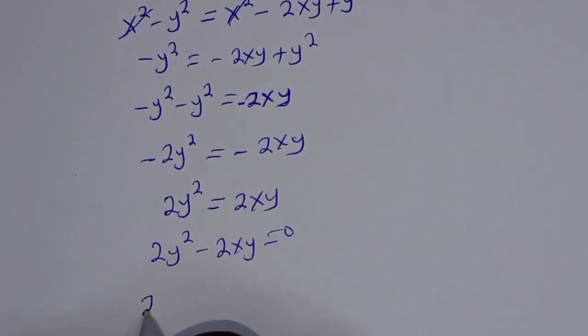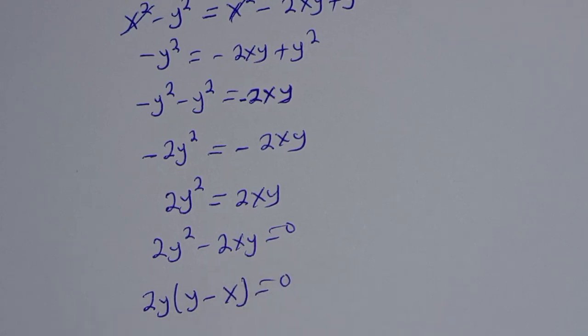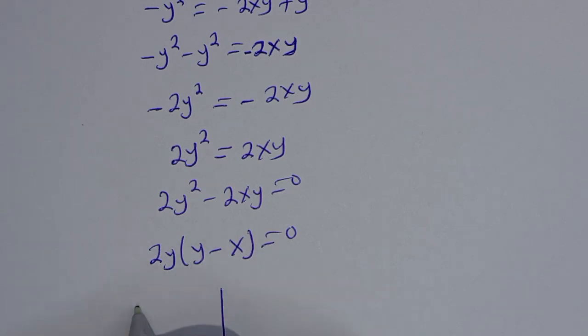Then 2y is common here. We have 2y bracket y minus x is equal to 0. There are two cases here. The first case is 2y is equal to 0.